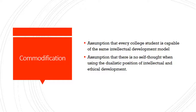Another assumption is that every college student is capable of the same intellectual development model. Perry constructed his theory to apply to a specific group of people and there's no account for how it would apply to students with intellectual disabilities or students that do not function in the same way in terms of developing intellectually and ethically. So it makes the assumption that people are commodities subject to the theory, meant to only apply to certain people that feed back into a system — producing a product at the end, which in a collegiate setting means critically and ethically developing during college and then applying that knowledge to a job or other endeavors after graduation.